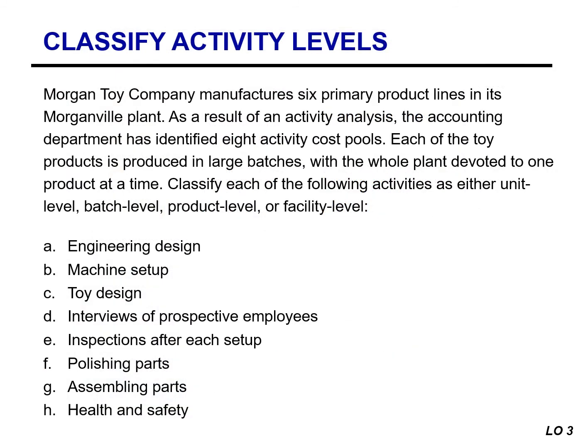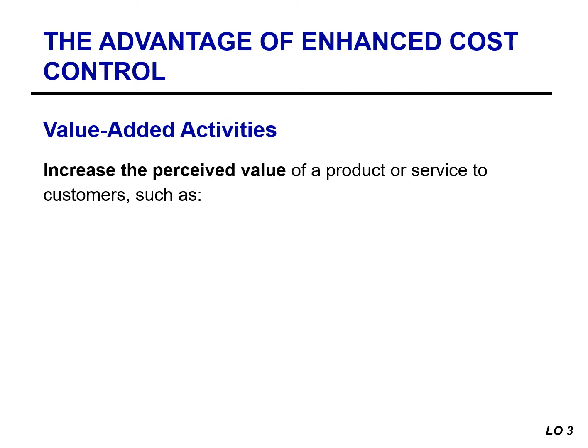In this exercise, classify each of the following activities as either unit, batch, product, or facility level activities. The solutions will be provided in the next video. In developing an ABC system, managers increase their awareness of the activities performed by the company in its production and supporting processes. This awareness helps managers classify activities as value added or non-value added.